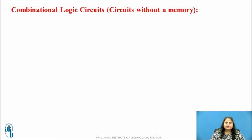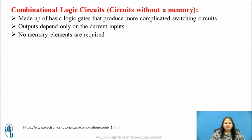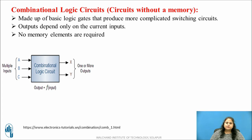Let us discuss combinational circuits. Combinational circuits are made up of basic logic gates that are combined or connected together to produce more complicated switching circuits. In this type of logic circuit, the output depends only on the current inputs and no memory elements are required. The block diagram of combinational circuits consists of multiple inputs and one or more outputs, and the output is expressed as a function of inputs.